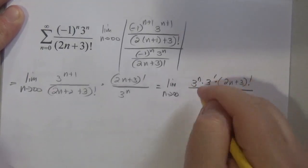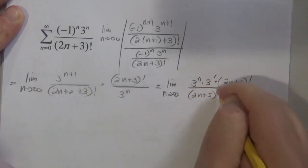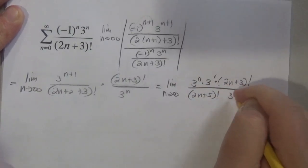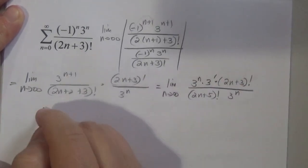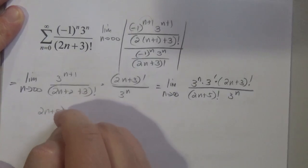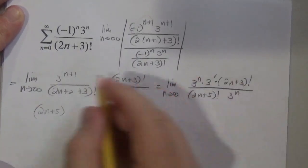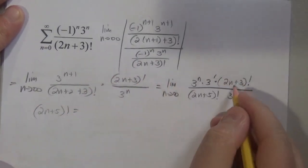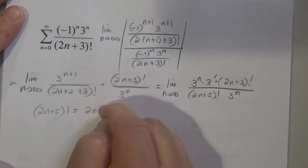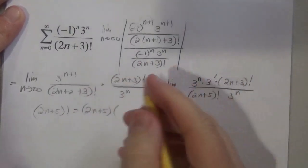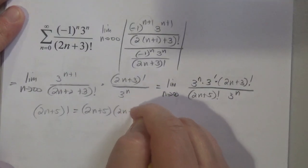Multiplication there, all over (2n + 5) factorial times 3 to the n. So (2n + 5), I just need to get it to be (2n + 3) factorial, right? (2n + 3) factorial. So I start with (2n + 5), and then I subtract 1 and keep multiplying.